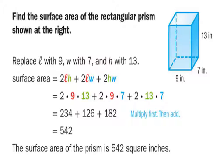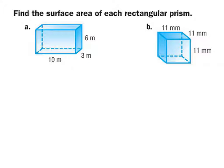You can see that the book finds length×height, length×width, and height×width, then multiplies each by 2 and adds them together. With a rectangular prism, it doesn't matter which dimension you call length, width, or height — you could label them differently and you'll still get the same answer of 542 square inches.